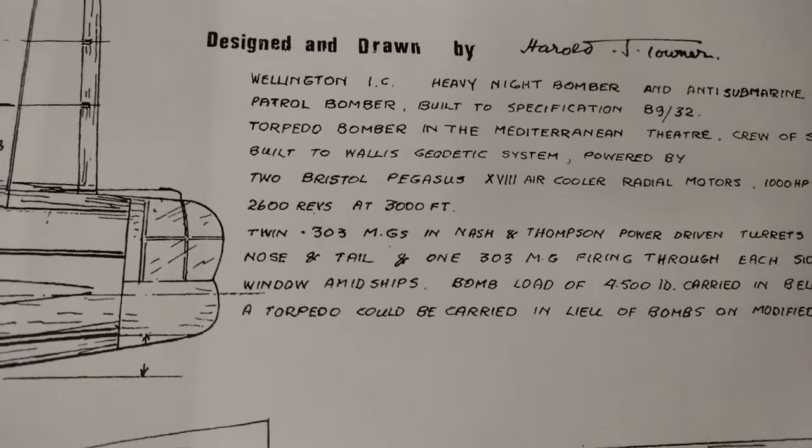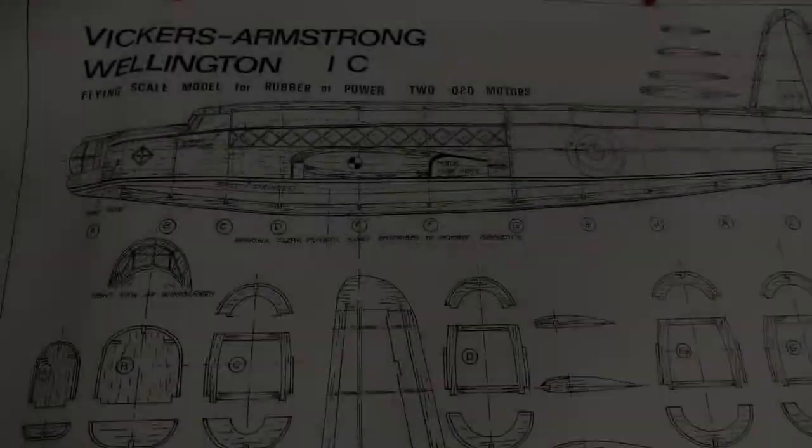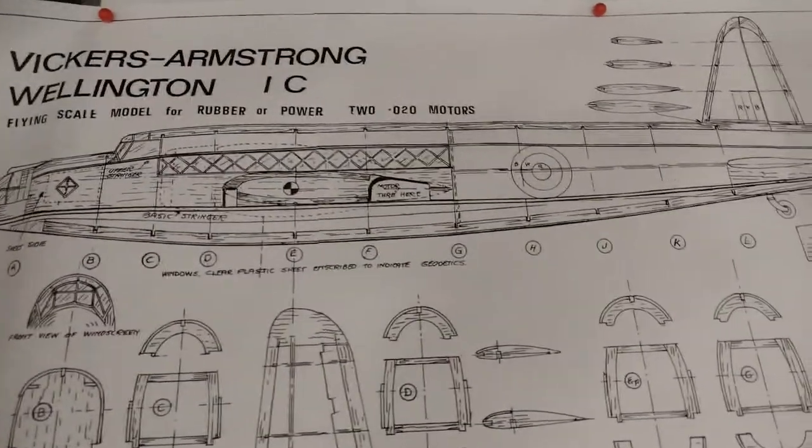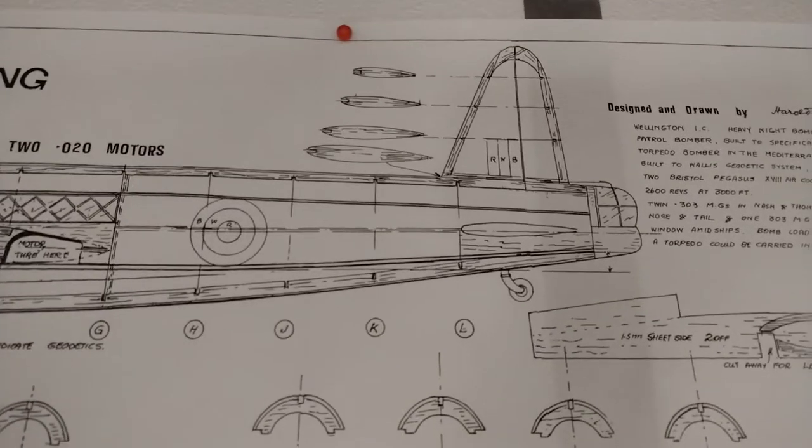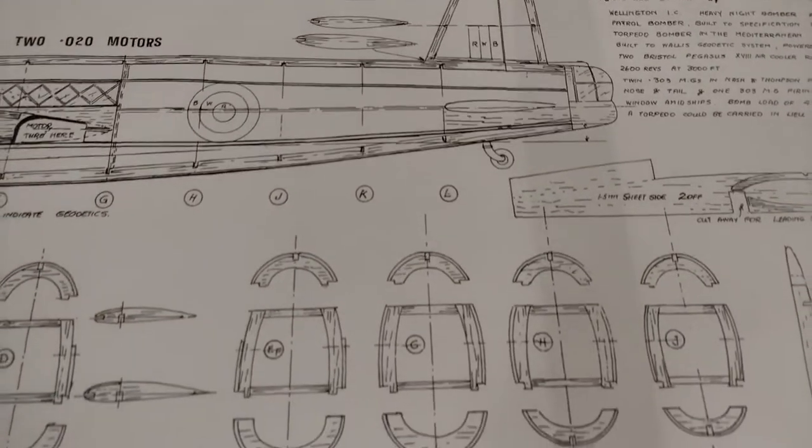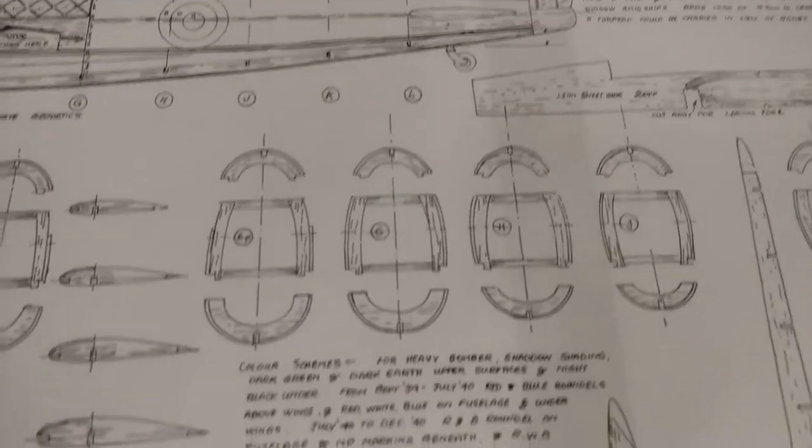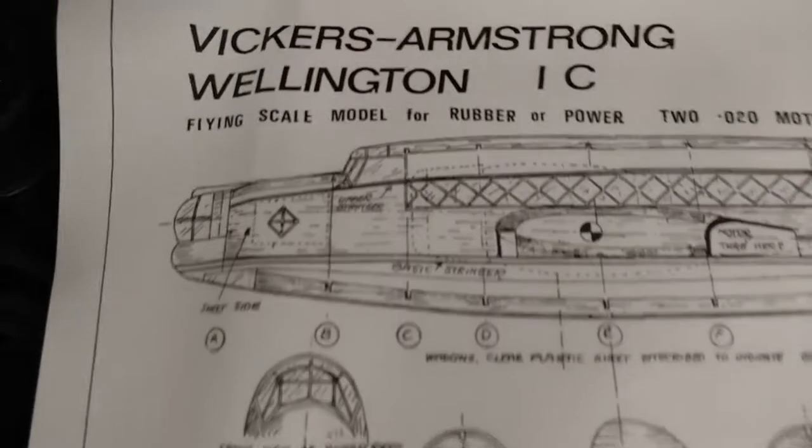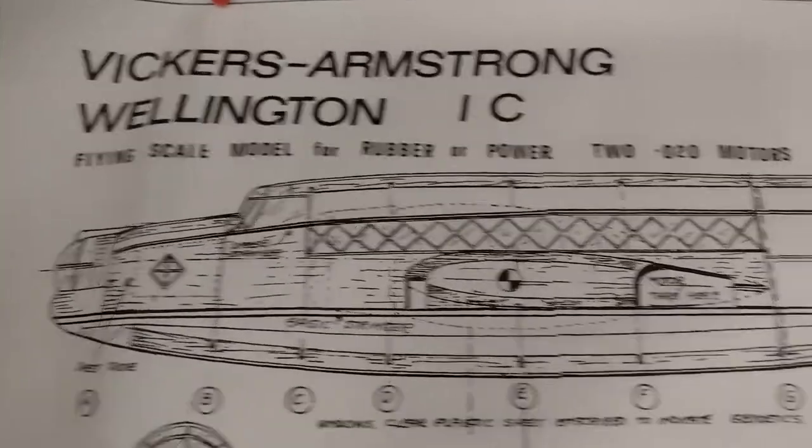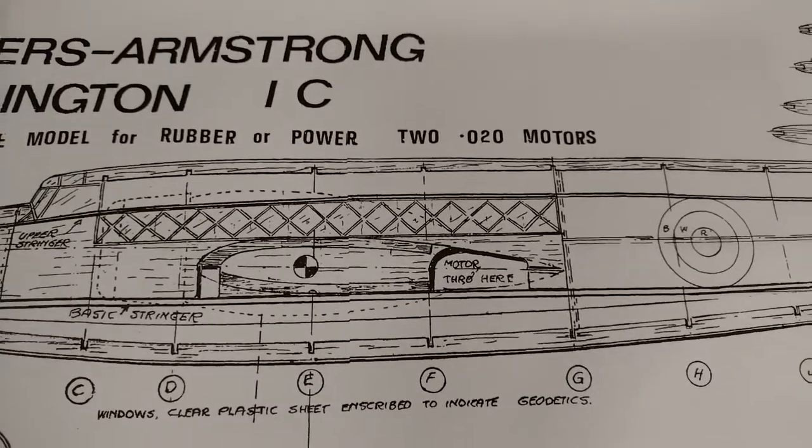Designed and drawn by Harold J. Towner. This is the new project, the Wellington, the famous World War 2 RAF bomber from the first part of the war. It's a balsa build, designed for either rubber or two 020 motors.